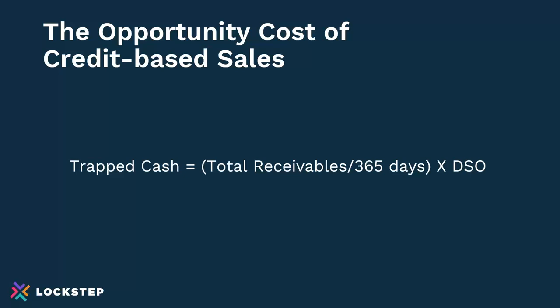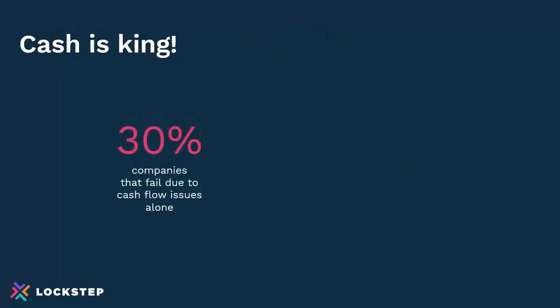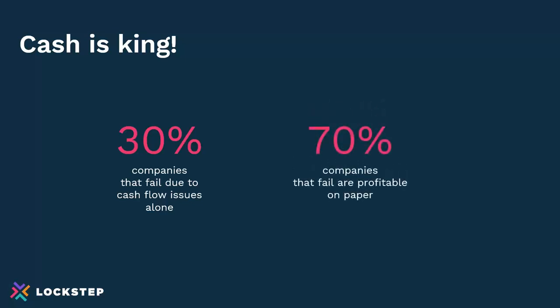There's also an opportunity cost of credit-based sales — that's the trapped cash. When your cash is locked up, you're not able to invest in the business, or you need to secure credit, a loan, or outside investment. This is really the biggest risk to your cash flow. We all know that cash is king. Nearly 30% of companies that close their doors fail due to cash flow issues alone. According to FinPacific, 70% of companies that fail are profitable on paper when they close their doors. So managing credit risk is critical to keeping the cash inflow ahead of the cash outflow to stay open for business.